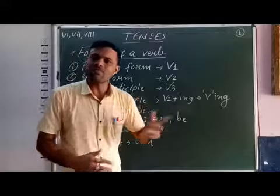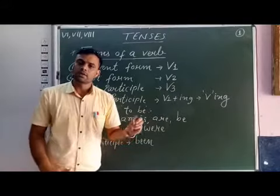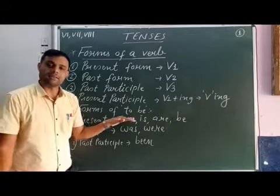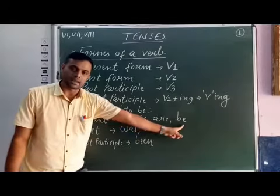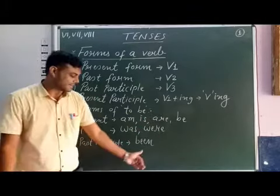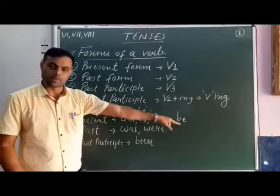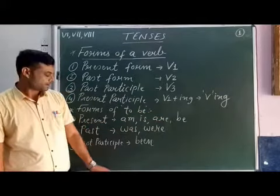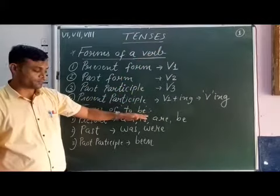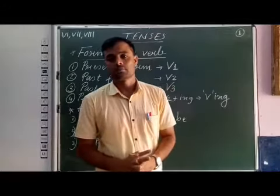Even in passive voice, we use to be forms. The different forms of to be — it is also a verb. The present form is am, is, are, and be itself. The past form is was and were. The past participle is be. Remember these forms of the verb and the forms of to be to learn and understand tenses properly. Thank you, students.